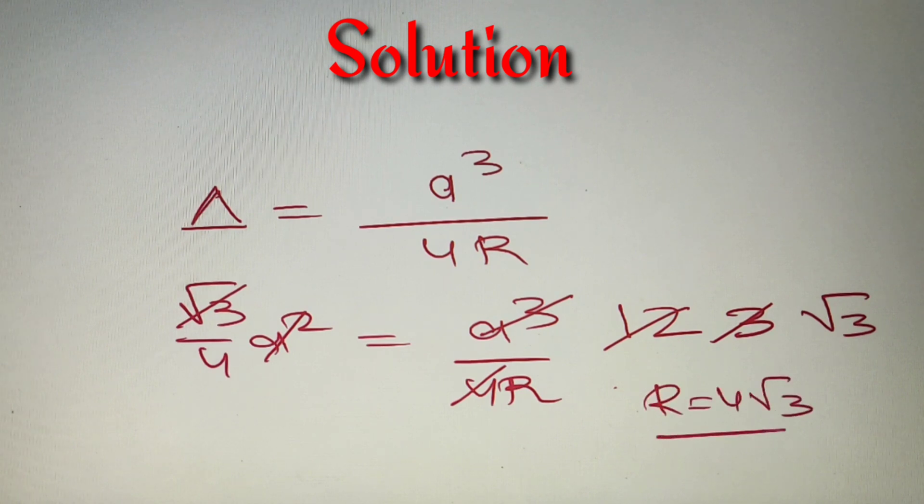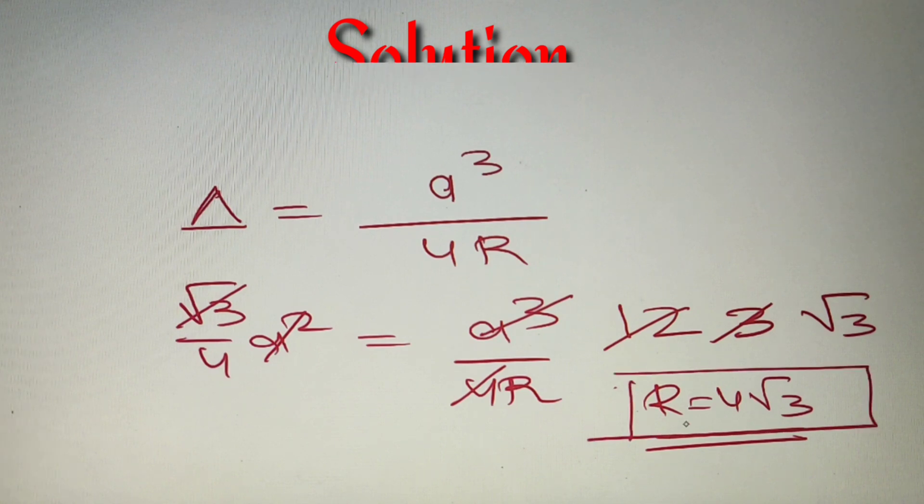So the final answer for the circumradius of an equilateral triangle is equal to 4√3 and according to our given option it is option number D. The final answer is option number D: 4√3.